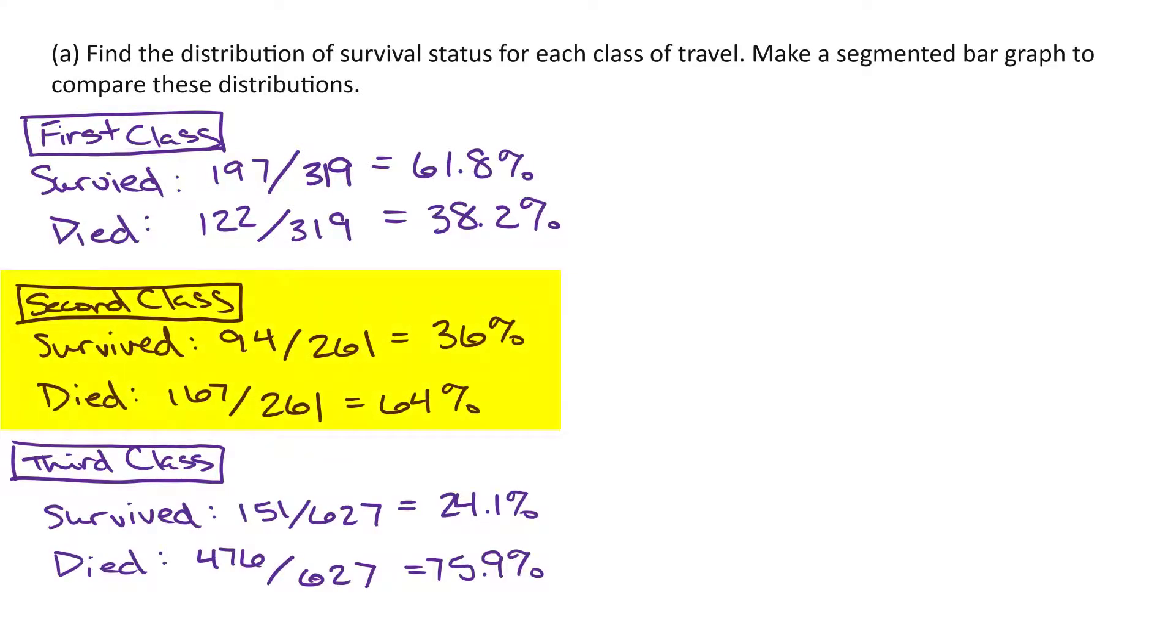For second class, the proportion who survived was 36% and 64% died. For third class, 24.1% survived and 75.9% died.